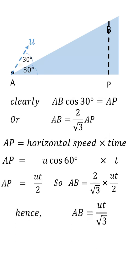Hence we get AB = ut/√3. Simple question — thank you for watching.